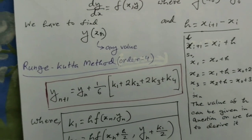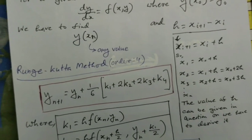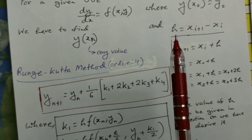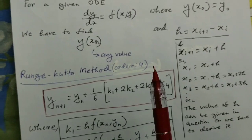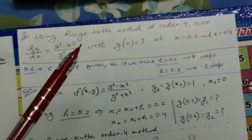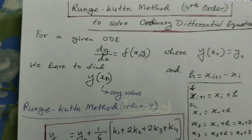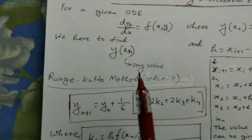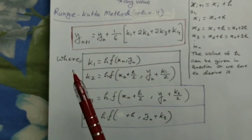The value of h can be given in the question or it may not be given. Like in this example, no value of h is given, so the value of h must be calculated. Now let's check the formula for the Runge-Kutta method of order 4.